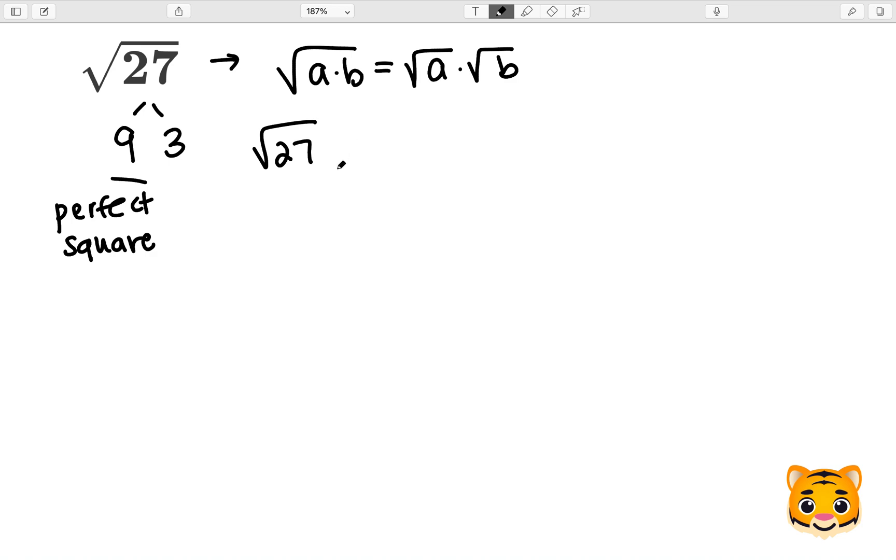Now we can rewrite the square root of 27 as the square root of 9 times 3. Using our math rule, we can then rewrite this as the square root of 9 times the square root of 3.